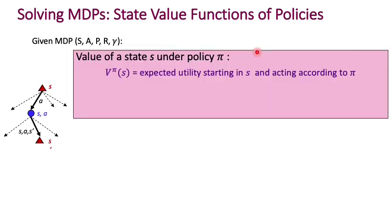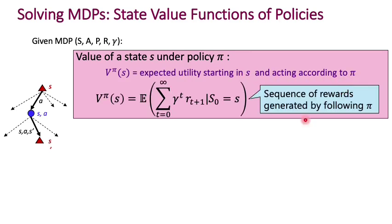Let's define the value function of a state s under policy pi — the state value function. It's simply the expected utility, which is the sum of discounted rewards, of starting in state s and acting according to policy pi. More mathematically, it's the sum of all future rewards after starting in state s, where the rewards come from following the policy pi.